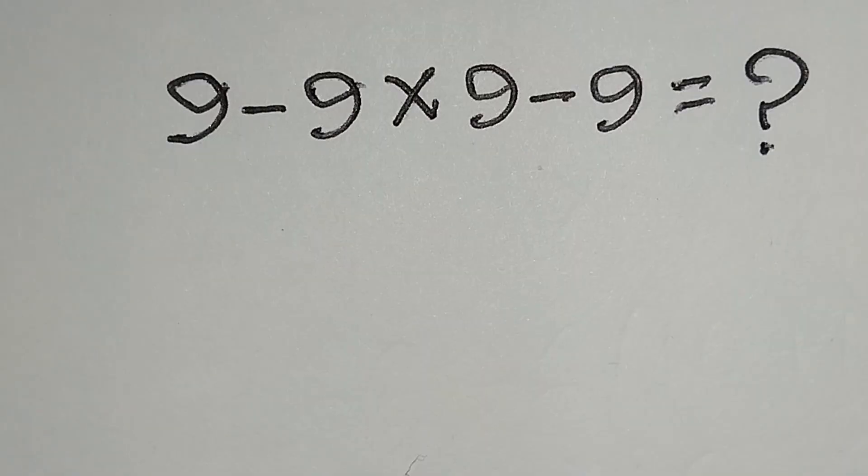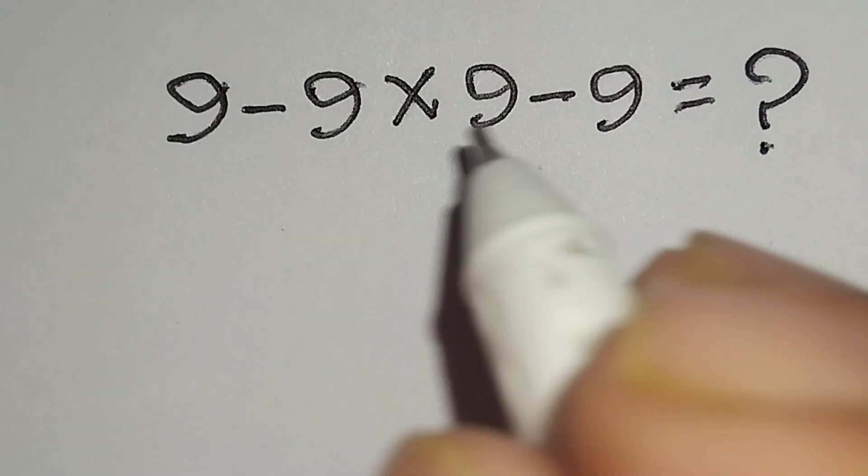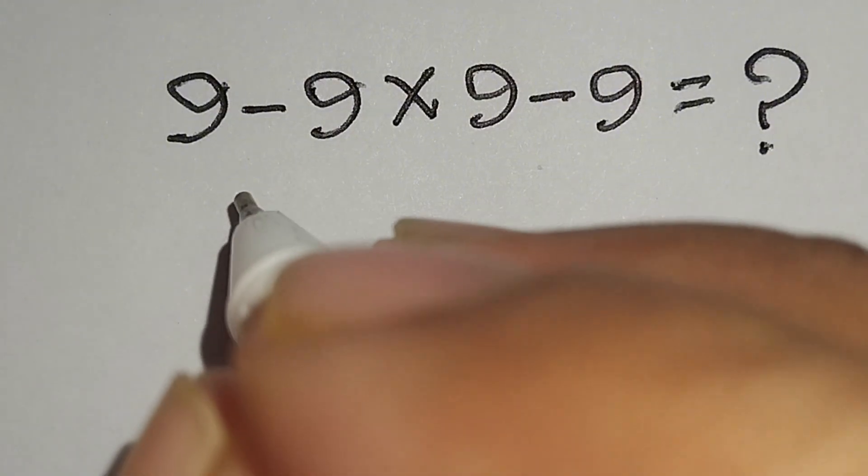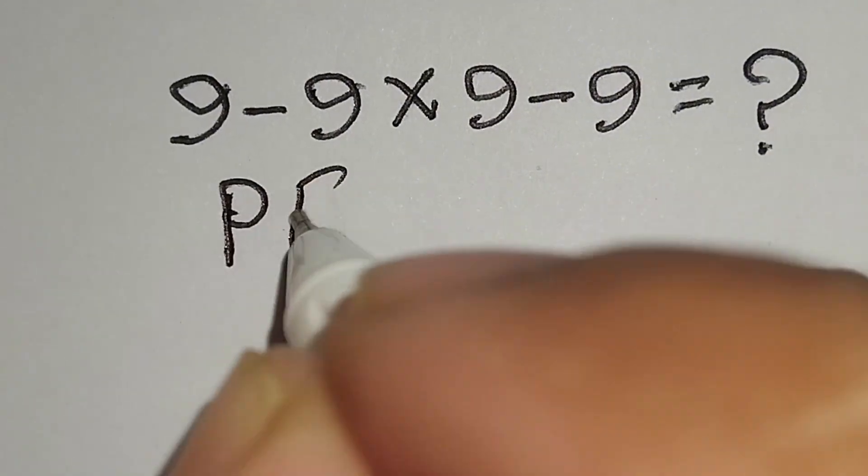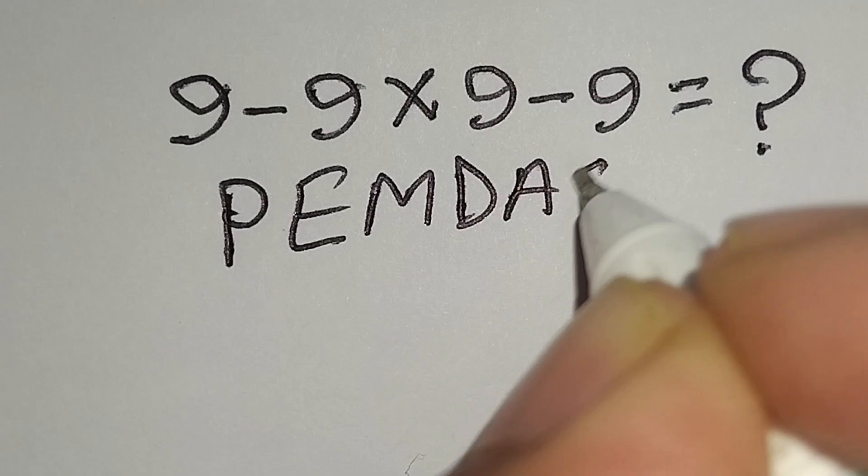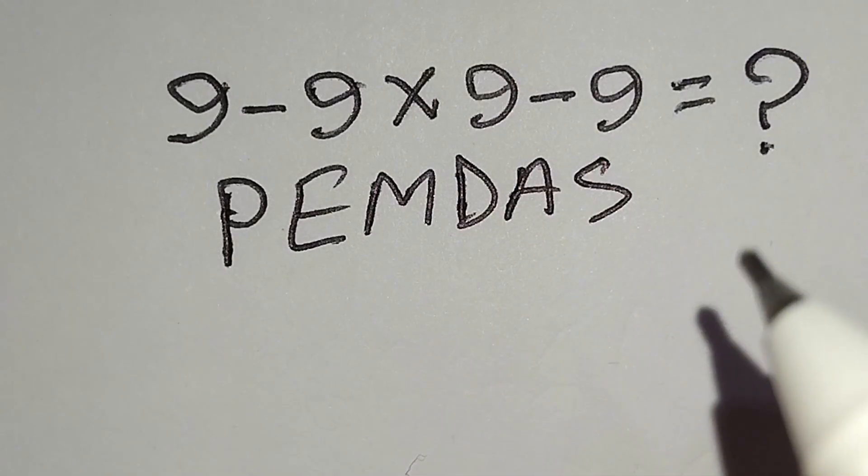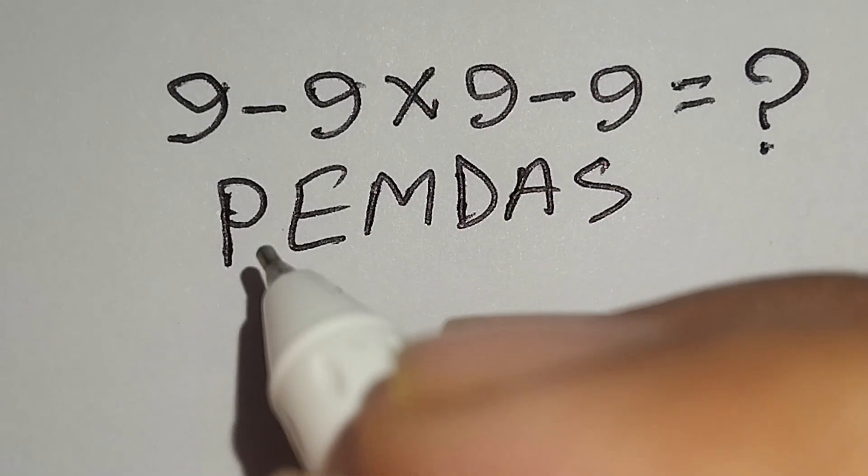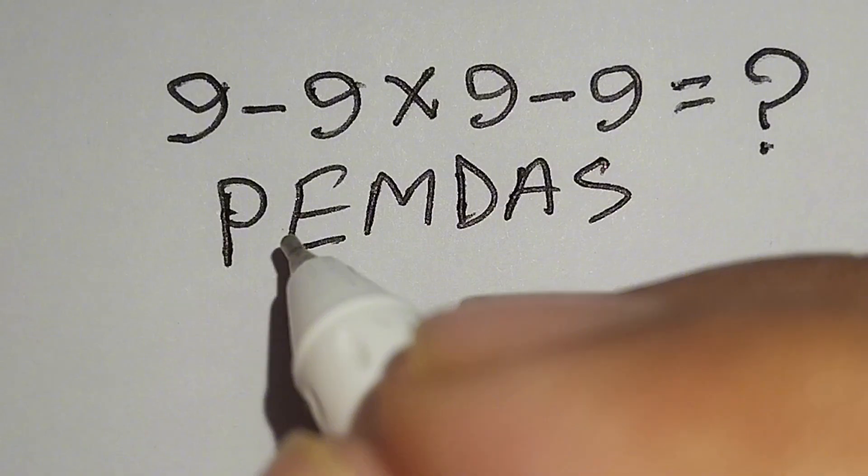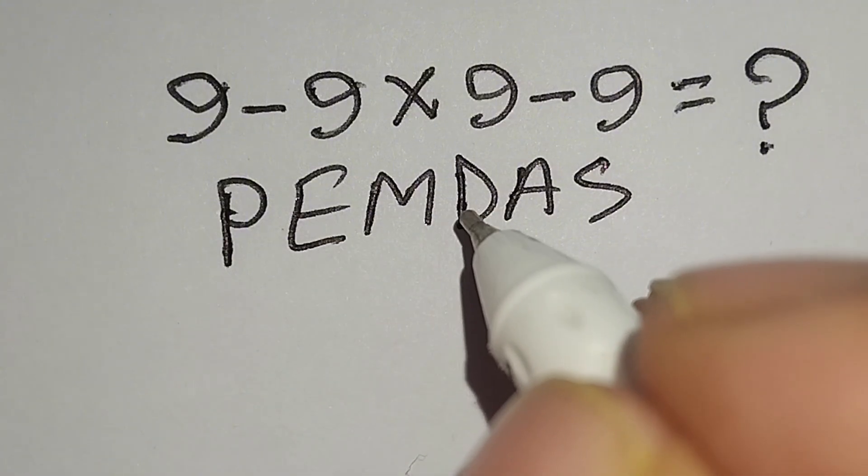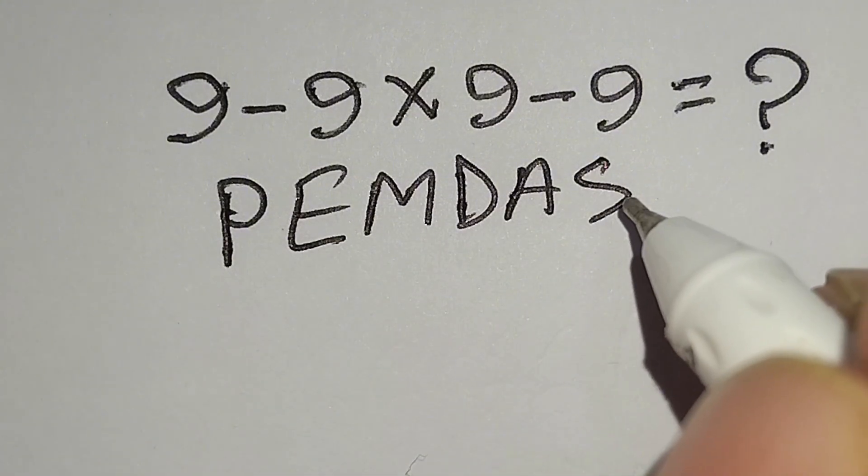Now I will apply PEMDAS rule to solve this math correctly. Here PEMDAS. According to PEMDAS rule, at first we have to work with parenthesis, then exponent, then multiplication or division, then addition or subtraction.